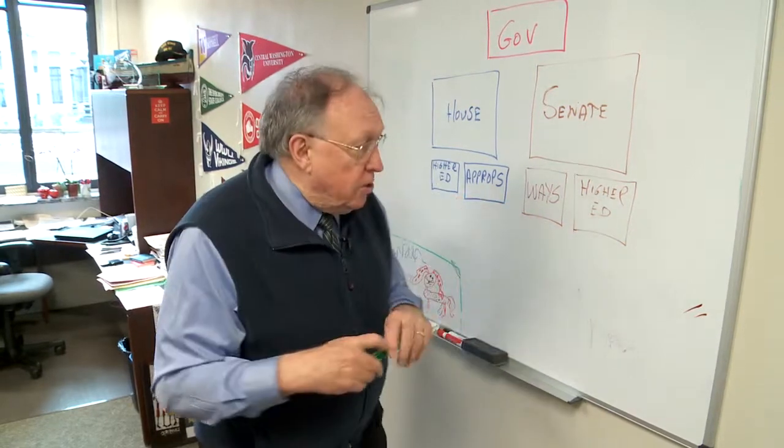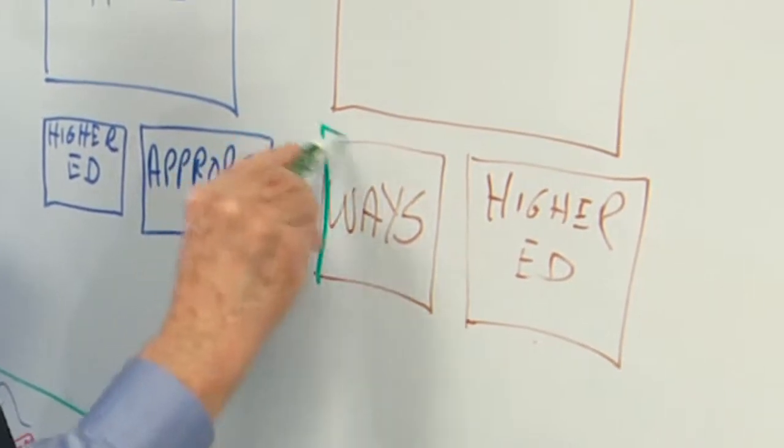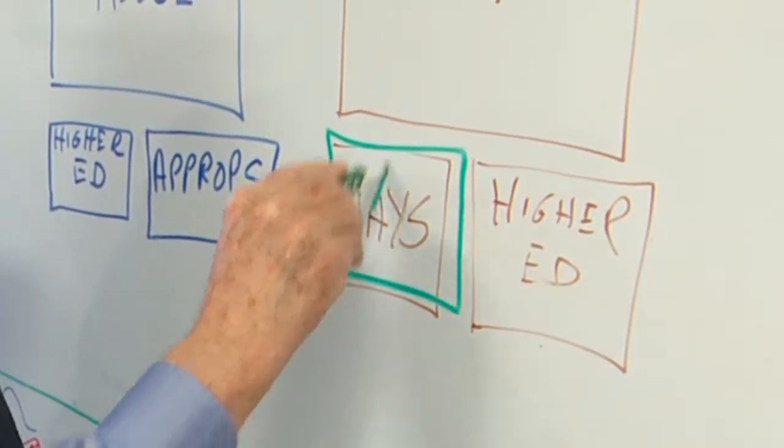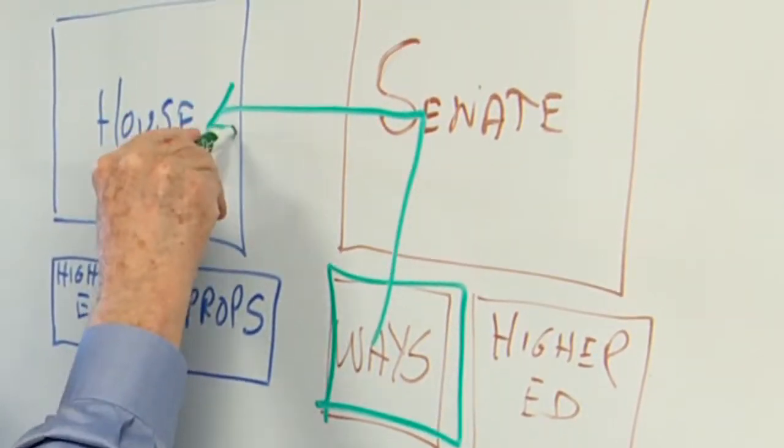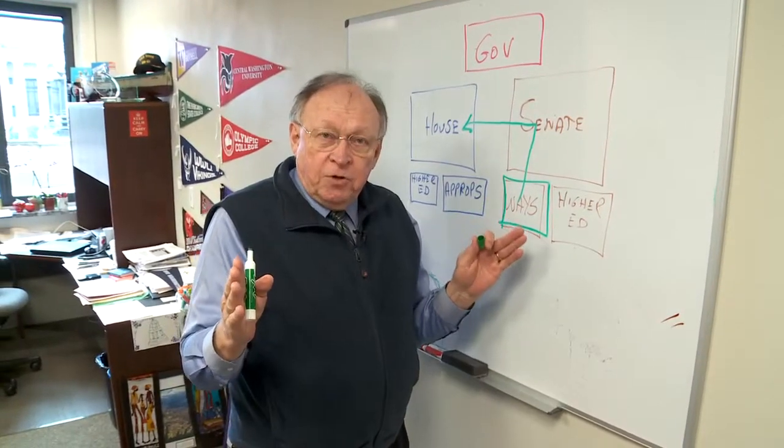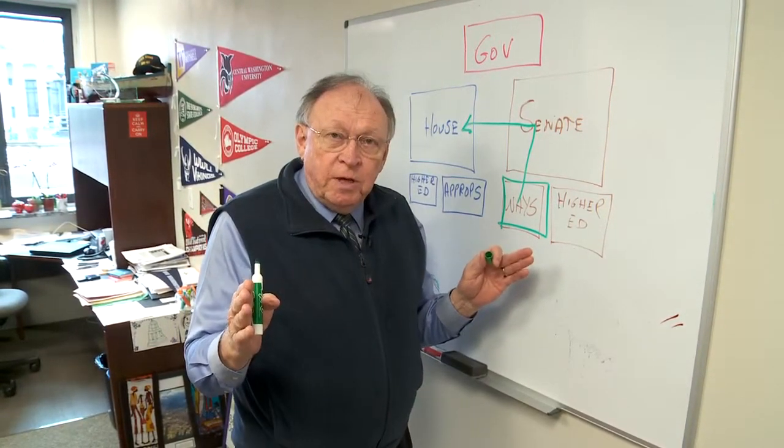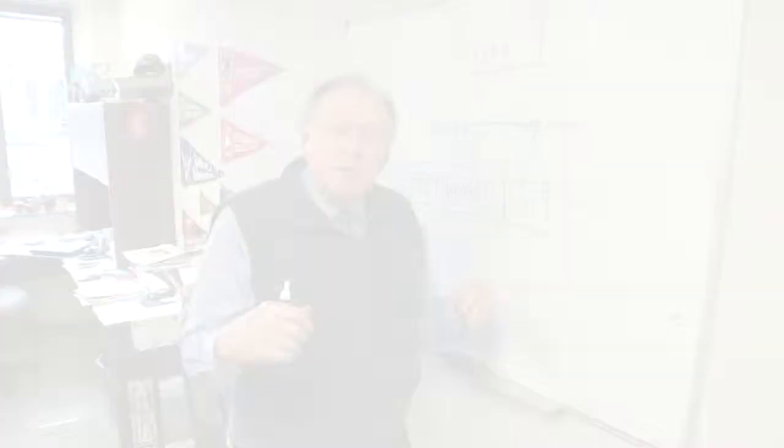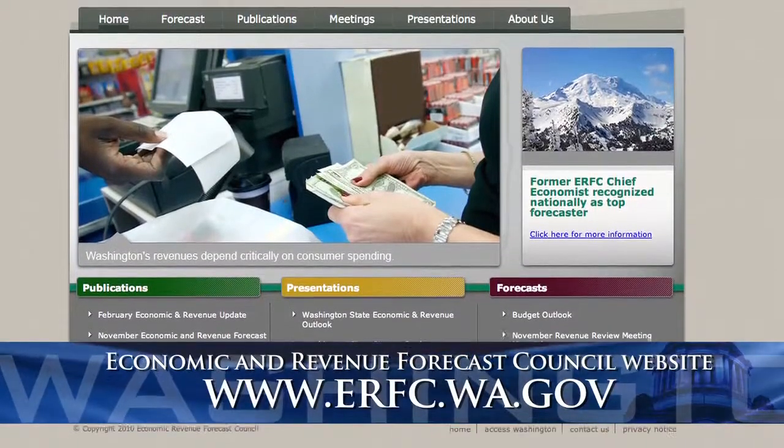So this year what's going to happen is that the Senate Ways and Means Committee is going to send to the Senate and then to us a budget bill. They're going to start after the 20th. Next week on the 20th of March is what's called the revenue forecast.